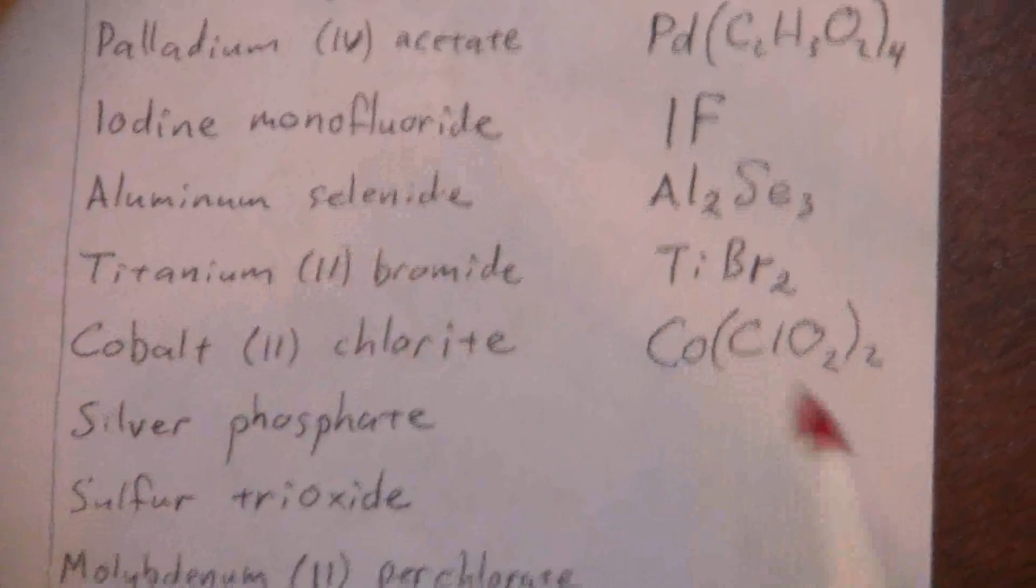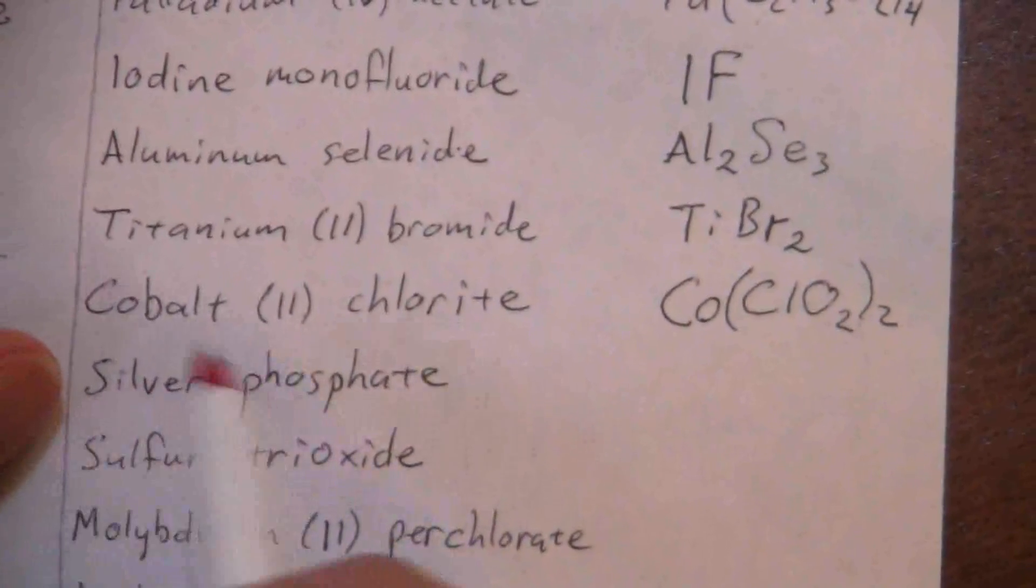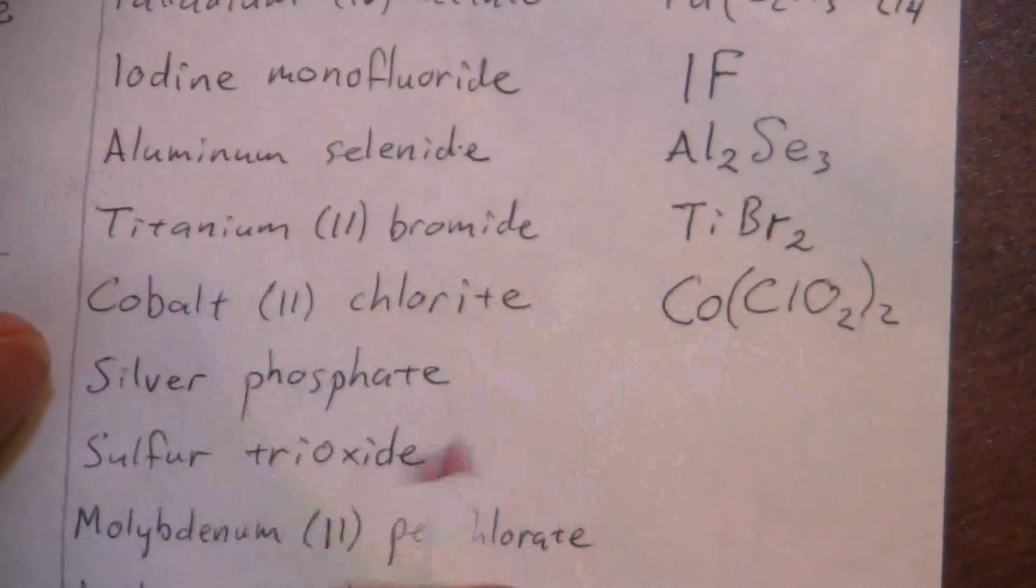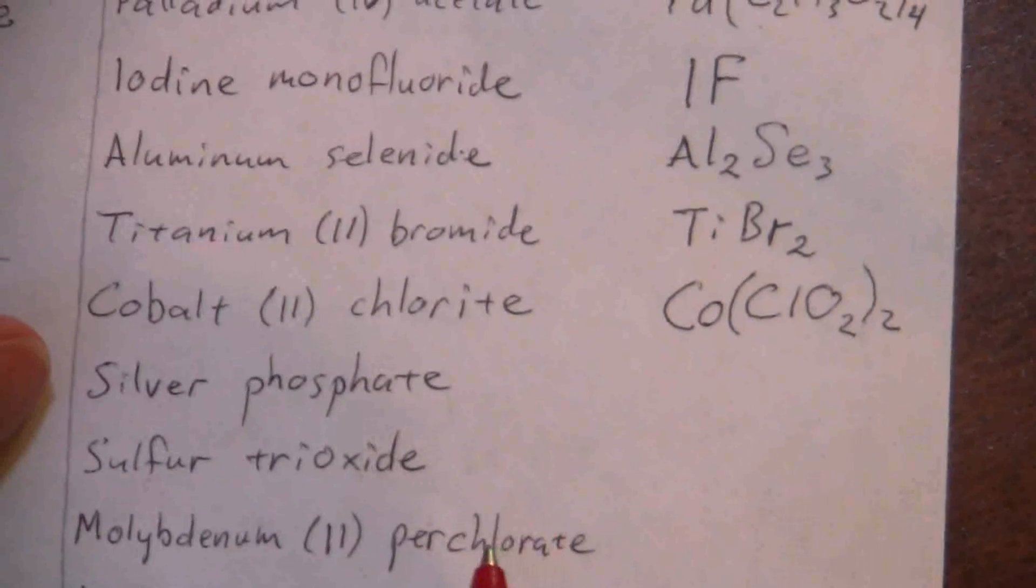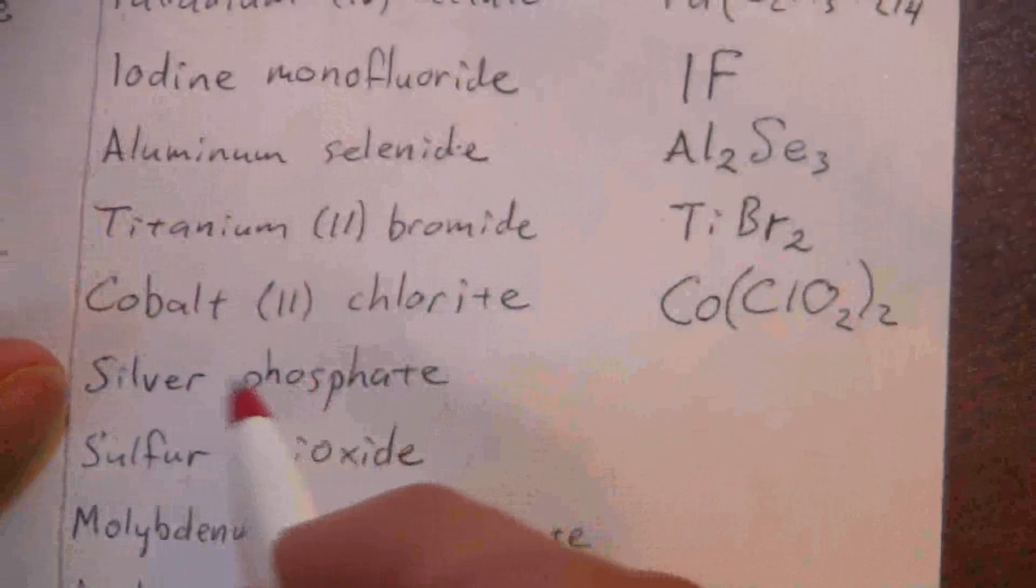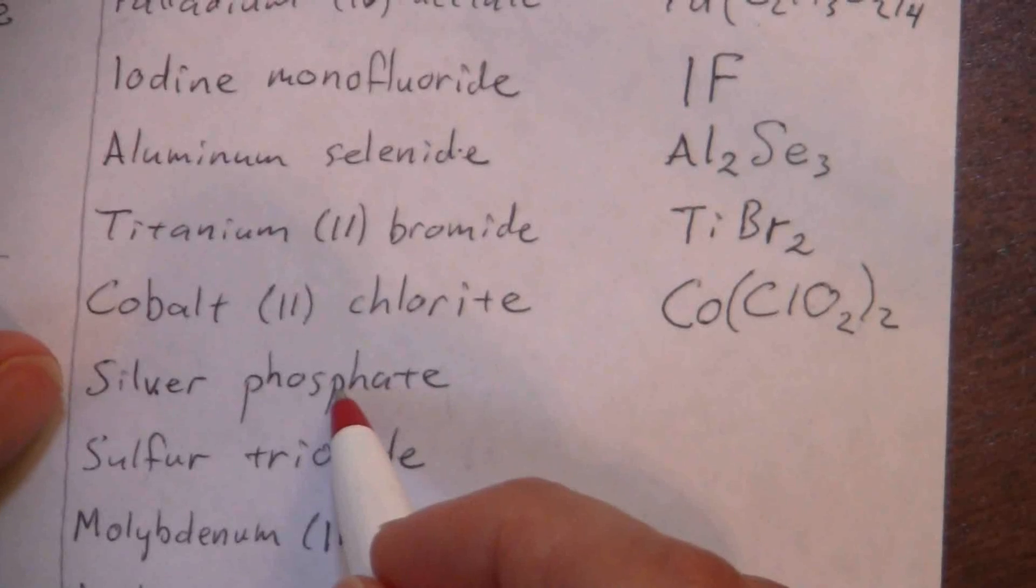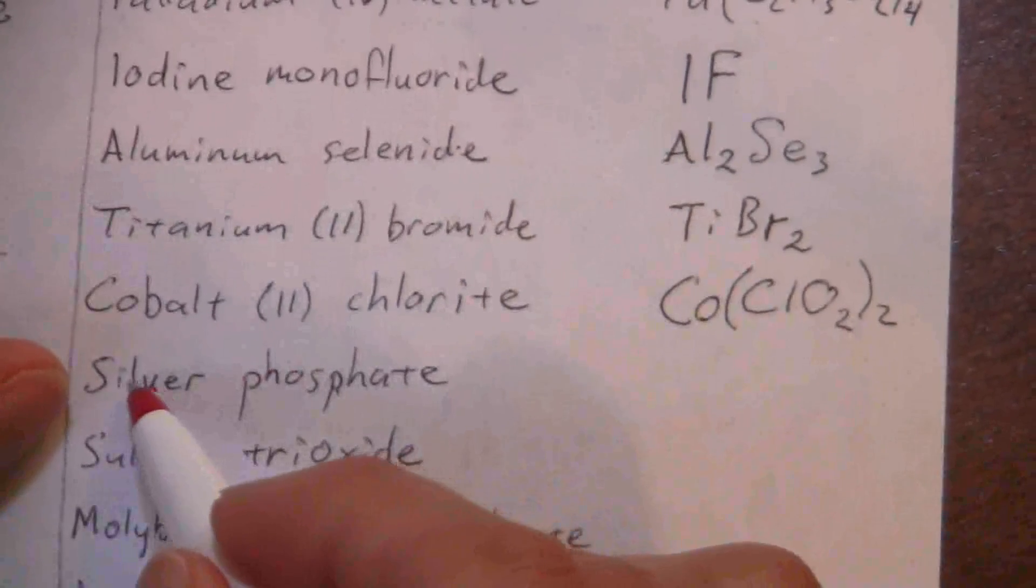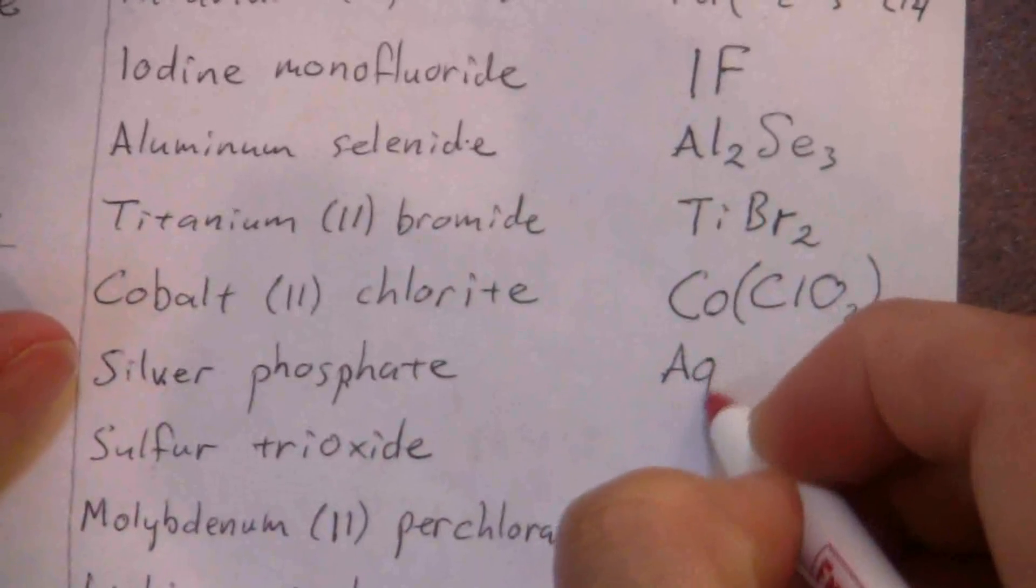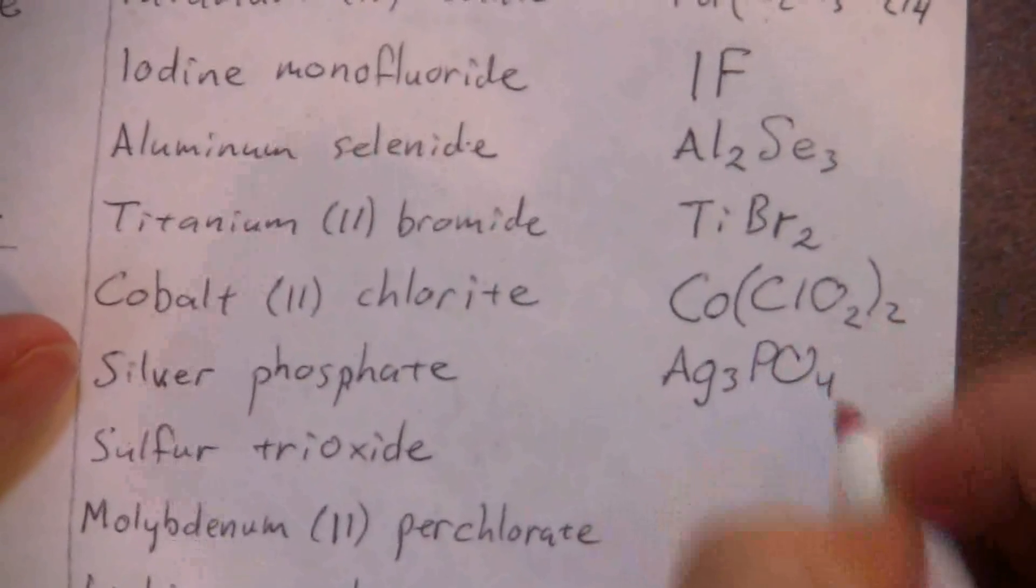Silver phosphate. Silver, even though it is a transition metal, has a fixed charge of plus one, so we don't write it there. We have a positive one. Phosphate is a negative three, PO4 with a negative three. I need three silver ions to balance that out, so Ag3PO4.